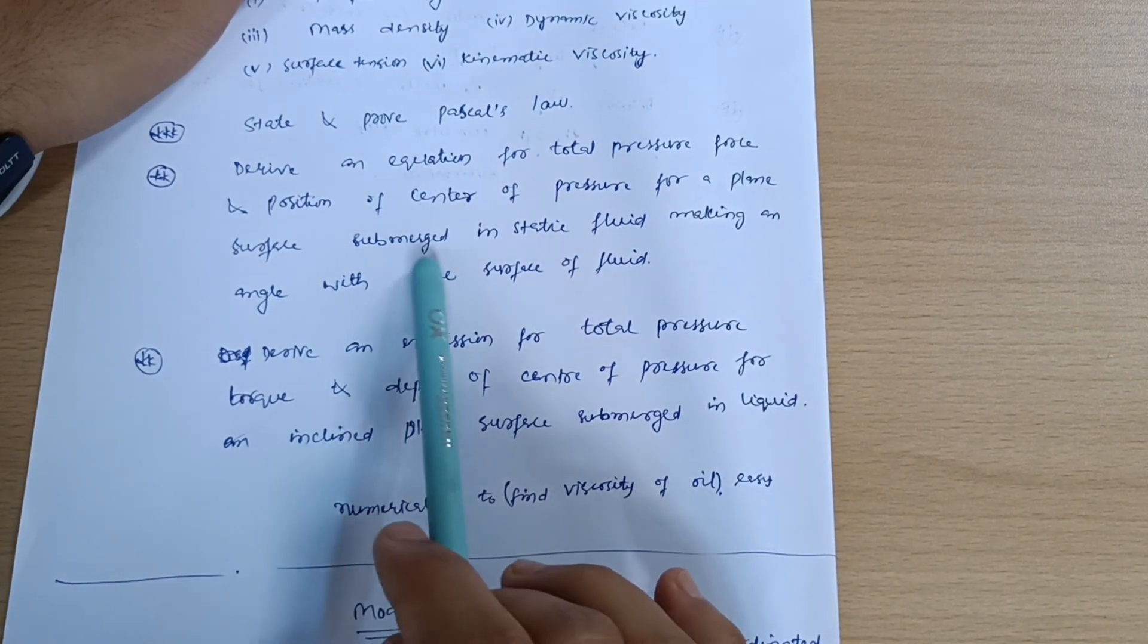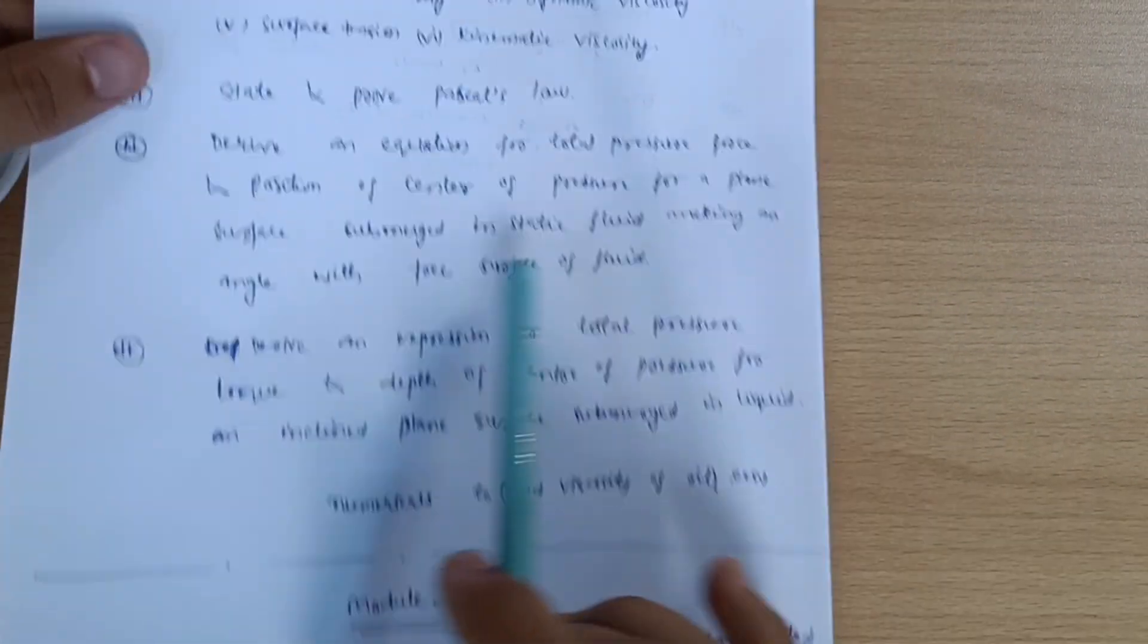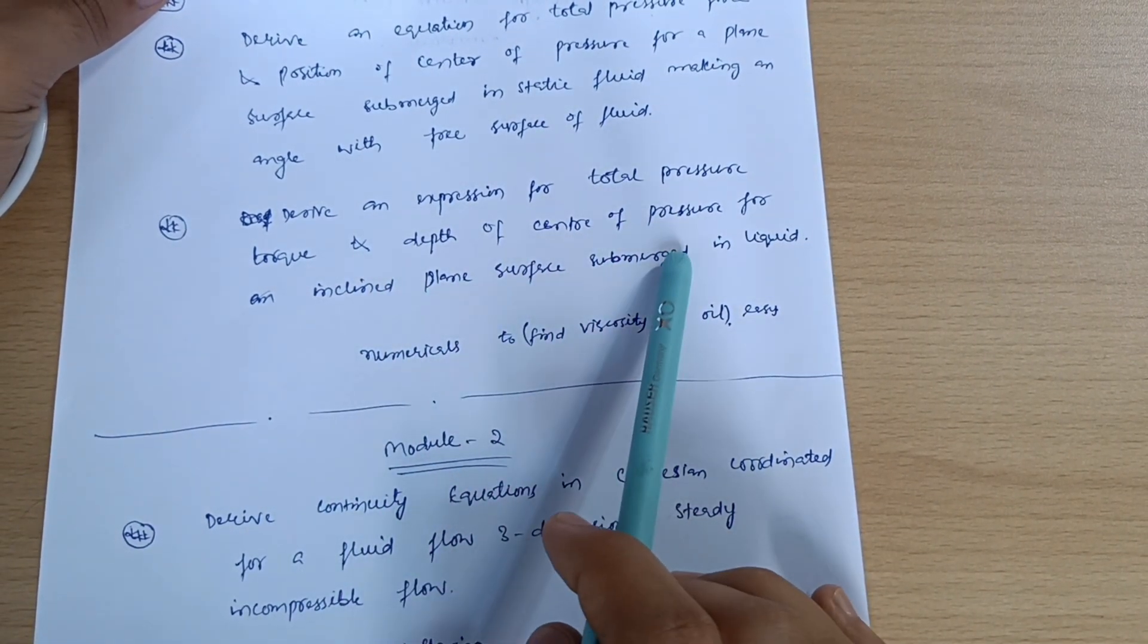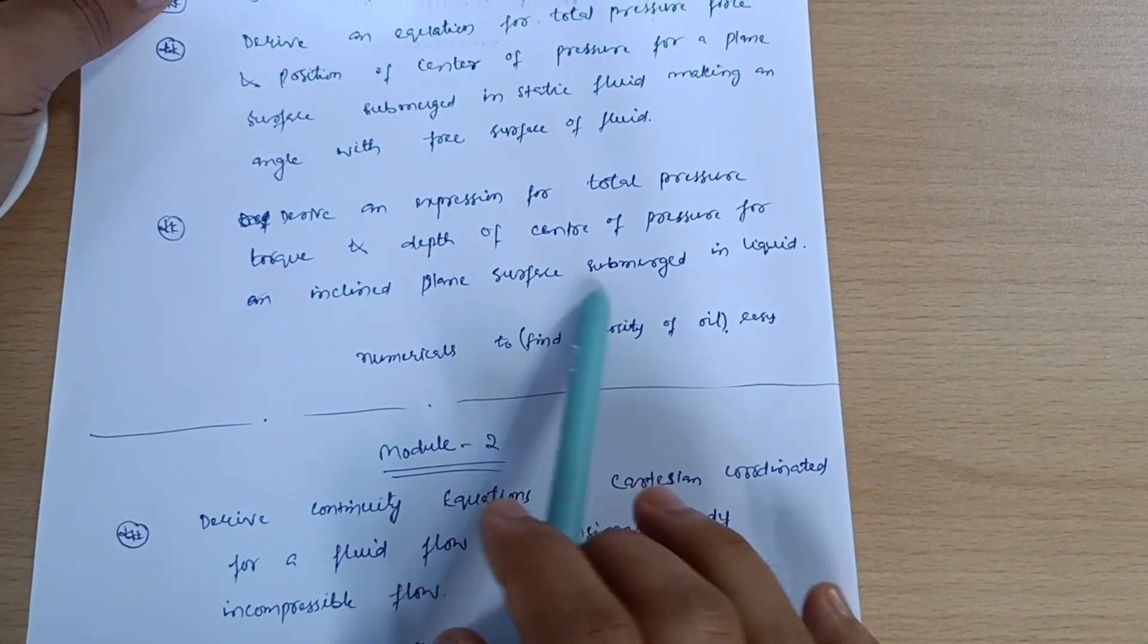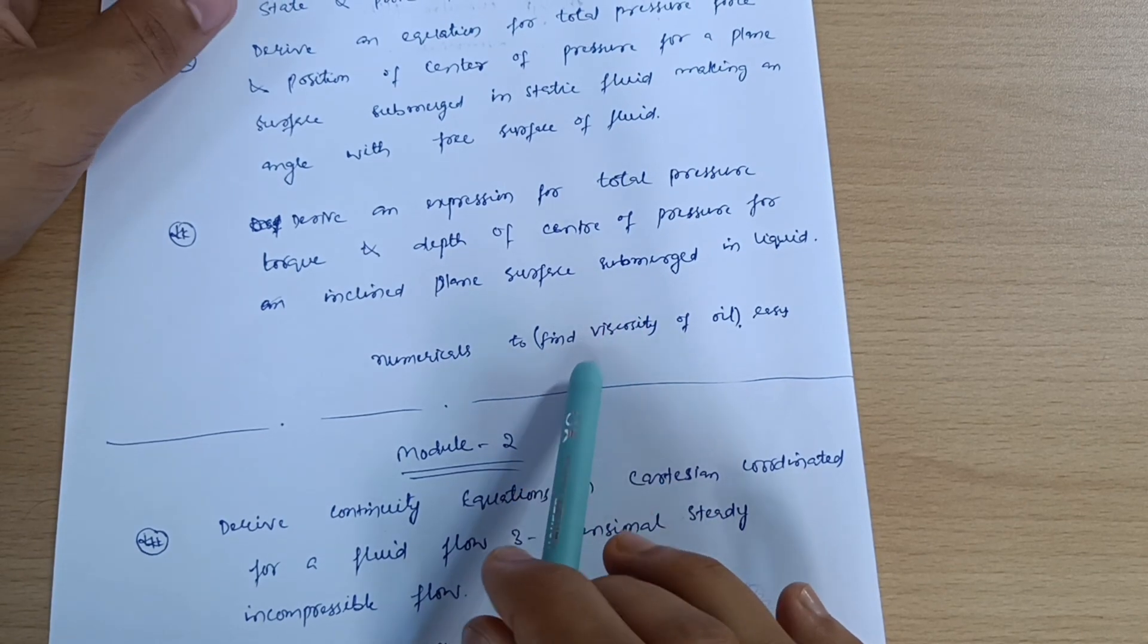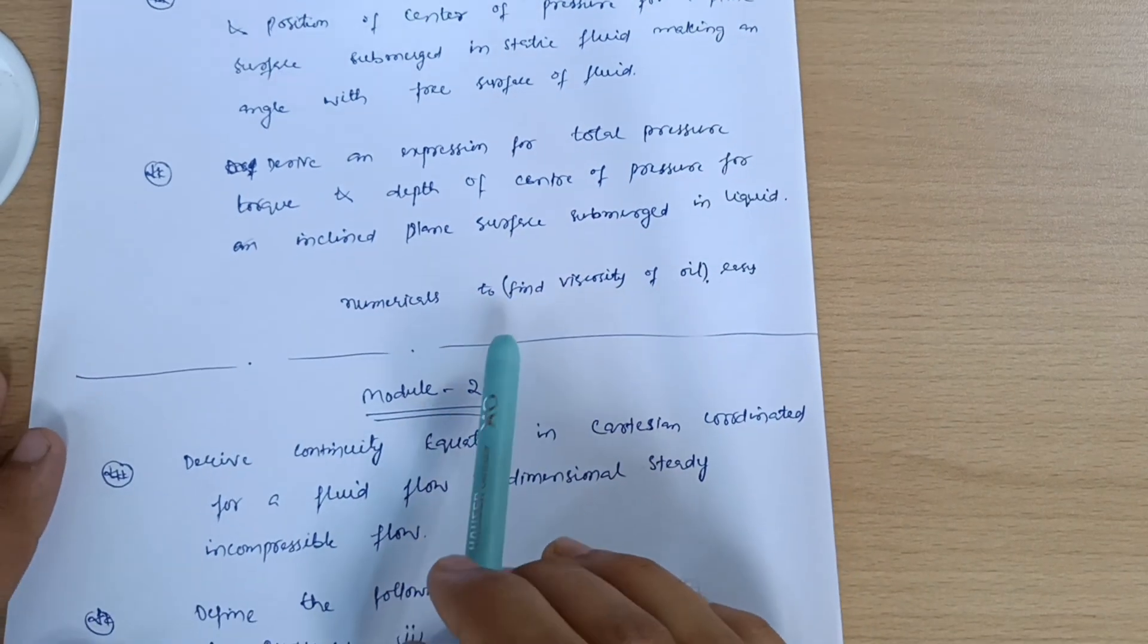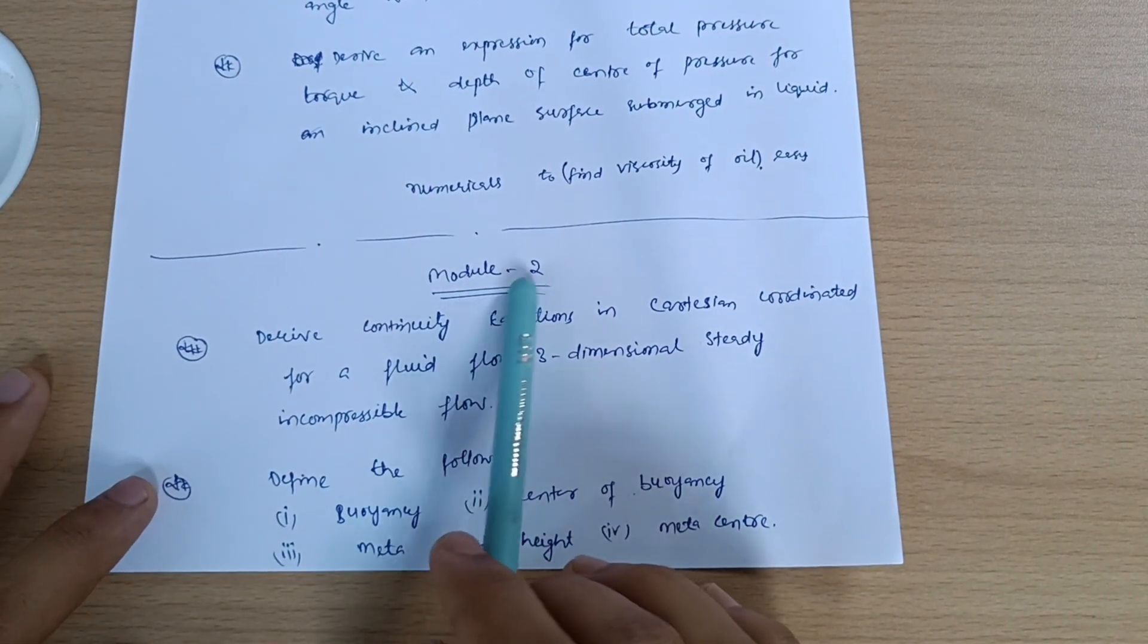State Pascal's law. Derive an equation for total pressure force and position of center of pressure for a plane surface submerged in static fluid making an angle with a free surface of fluid. Derive an expression for total pressure torque and depth of center of pressure for an inclined plane surface submerged in liquid. Also numericals to find the viscosity, which are very easy ones. You can refer old scheme papers of Fluid Mechanics so that you will get an idea of what type of numericals are coming in the VTU examination.